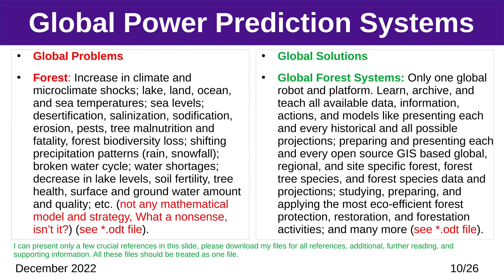Global Problem — Forest: increase in climate and microclimate shocks, lake, land, ocean, and sea temperatures; desertification, salinization, sodification, erosion, pests, tree malnutrition and fatality, forest biodiversity loss, broken water cycle, decrease in lake levels, soil fertility, tree health, surface and groundwater amount and quality, etc. Global Solution — Global Forest Systems: learn, archive, and teach all available data, information, actions, and models; prepare open-source GIS-based global, regional, and site-specific forest, forest tree species, and forest species data and projections; study, prepare, and apply the most eco-efficient forest protection, restoration, and forestation activities, and many more.